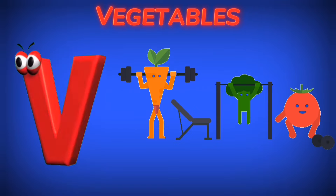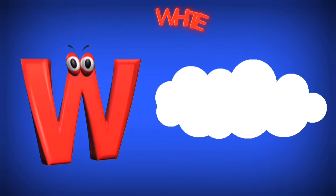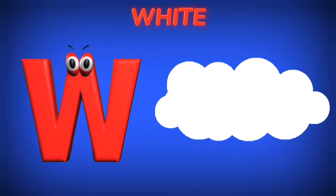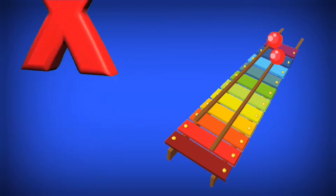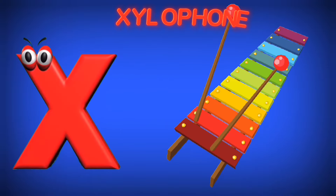V is for Vegetables. V, V. Vegetables. W is for White. W, W. White.